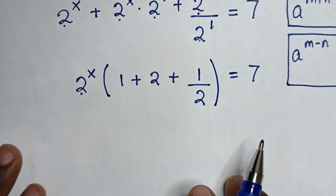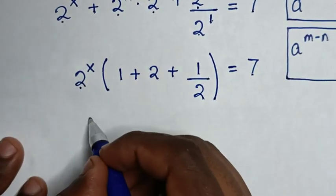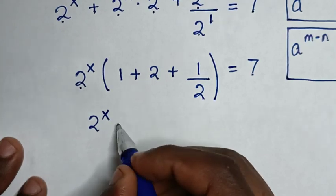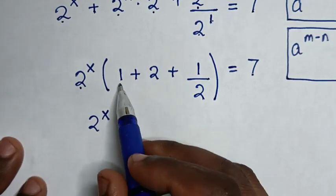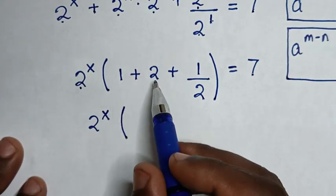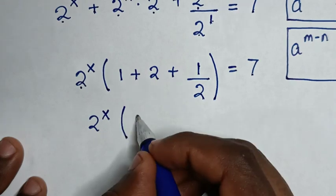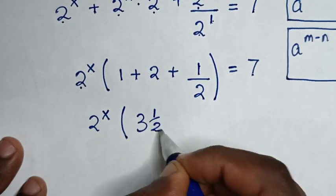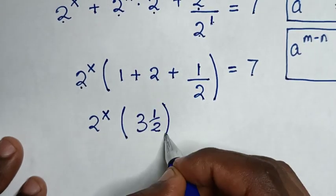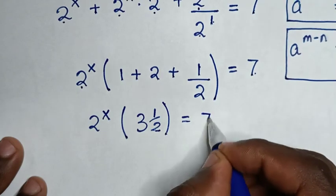Then in the next step, it will be 2 power of x times bracket 1 plus 2 is 3, plus a half. So the bracket is 3 and a half, and the bracket is equal to 7.